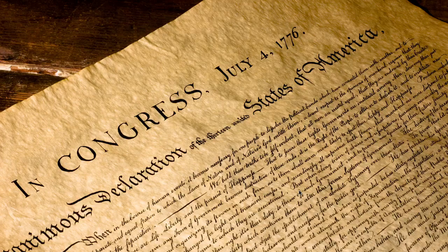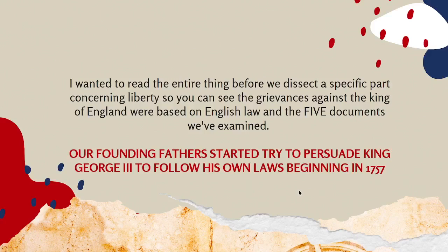The things our founding fathers put in place were meant to protect us from the things we're seeing happening today. When you look at the 1100 Charter of Liberties down to the Magna Carta, the final document that ultimately led us to war was the Declaration of Independence — a legal document written by our government. I wanted to highlight a couple of things so you can see what it contains.